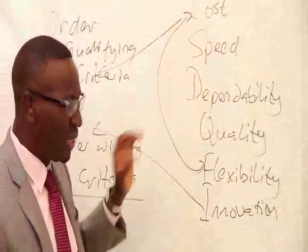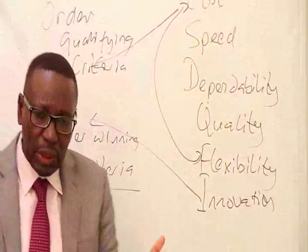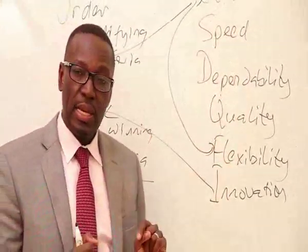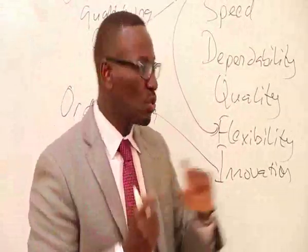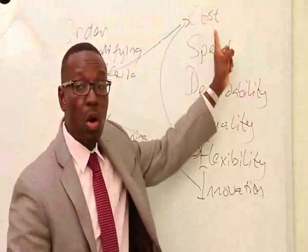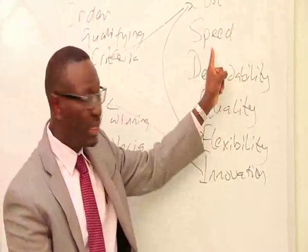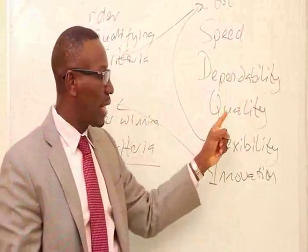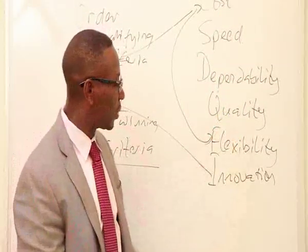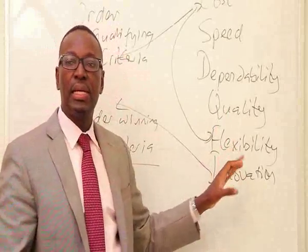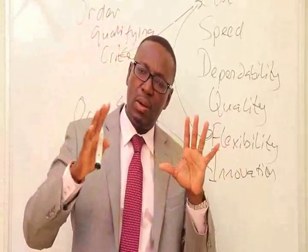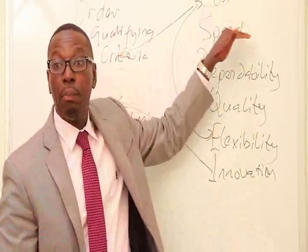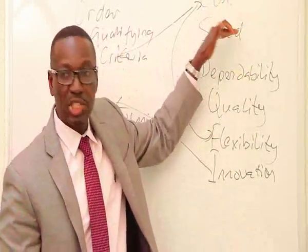So what's the connection of this with our operations? When we look at operations, the reason we call these operations objectives is this: if you're an operations manager within an organization, these would be like your KPIs. How can I deliver cost in my production process? How can I deliver speed? How can I make sure my system is dependable? How can I deliver quality services and quality products? How can I deliver flexibility and innovation? When we think about the operations and supply chain management model, the essence of the model is: what are those things we can put in place to help us deliver each one of these?